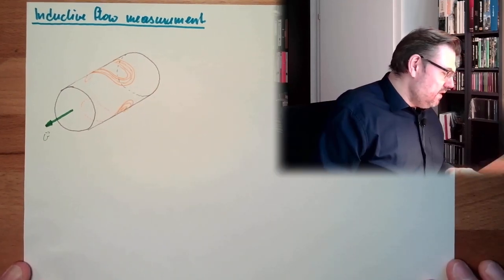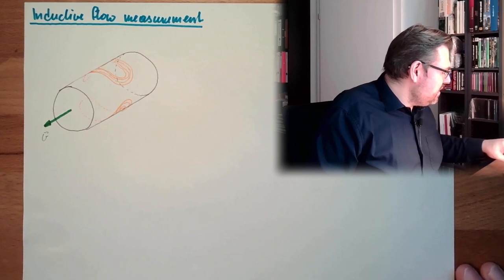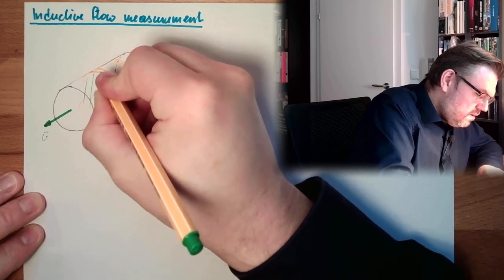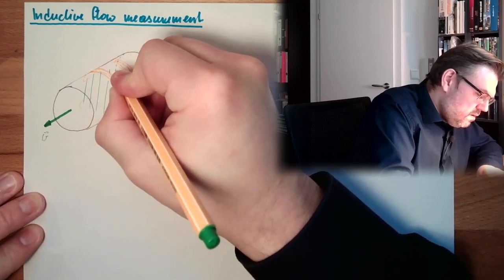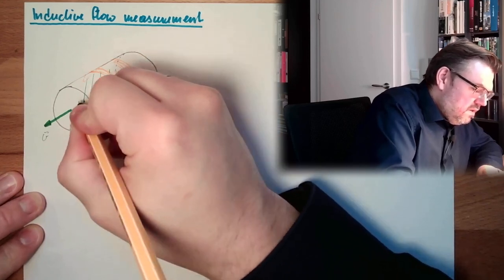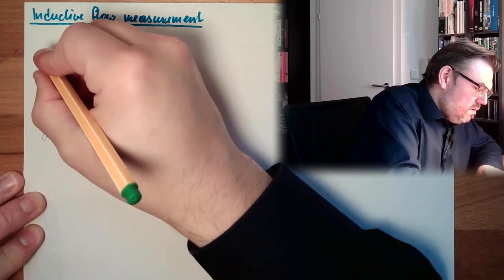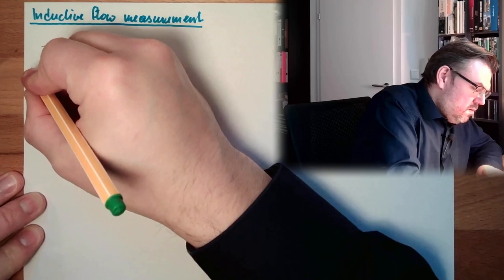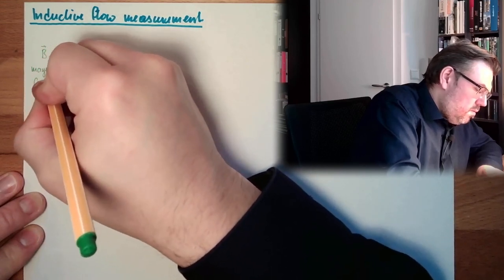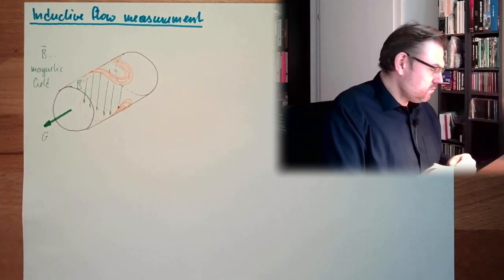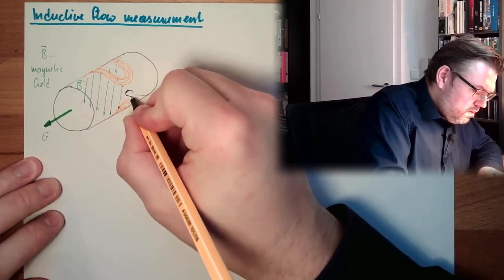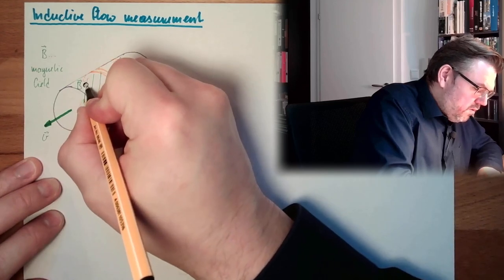This coil is producing here between here and here a magnetic field B. And here we place some electrodes, one here, and one at the opposite side.